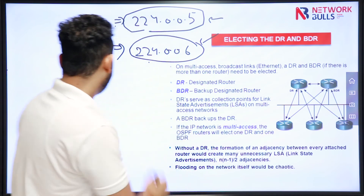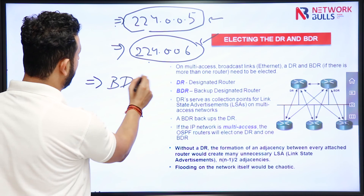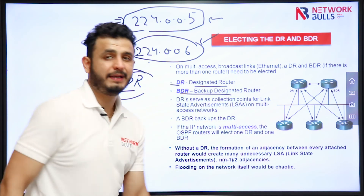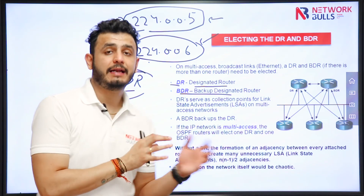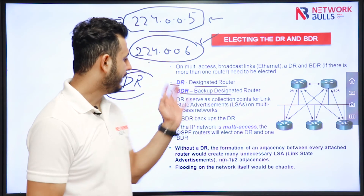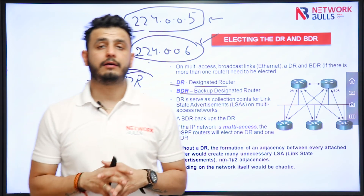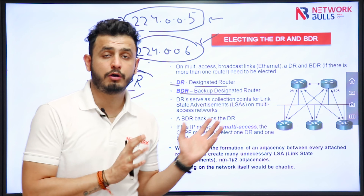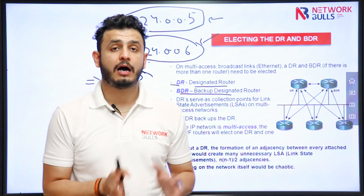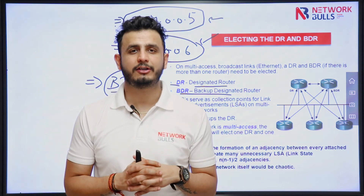The BDR stands for Backup Designated Router. BDR will take the place of DR in case the DR fails. DR and BDR election is done on the basis of priority. In this video, we have understood what the different OSPF network types are and how DR/BDR election takes place in case of OSPF. Thank you.